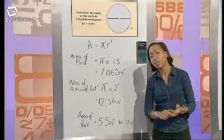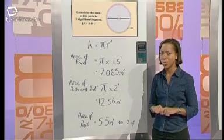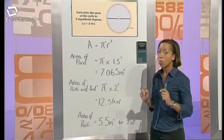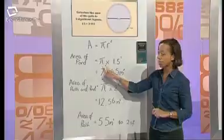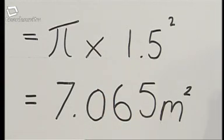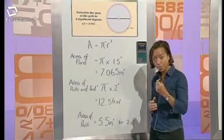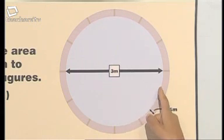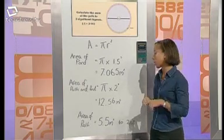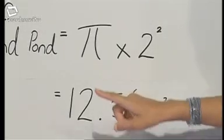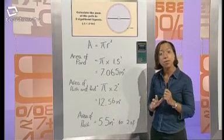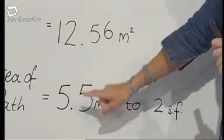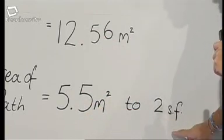I also started by finding the area of the pond using A equals pi r squared. The diameter of the pond is three metres, so the radius is 1.5 metres. 1.5 squared multiplied by 3.14 is 7.065 metres squared. To work out the area of the path and the pond, I found the new radius: 1.5 plus 0.5 — that's the width of the path — so the new radius is two metres. Two squared multiplied by 3.14 is 12.56. Subtracting the pond area gives 5.5 metres squared to two significant figures.